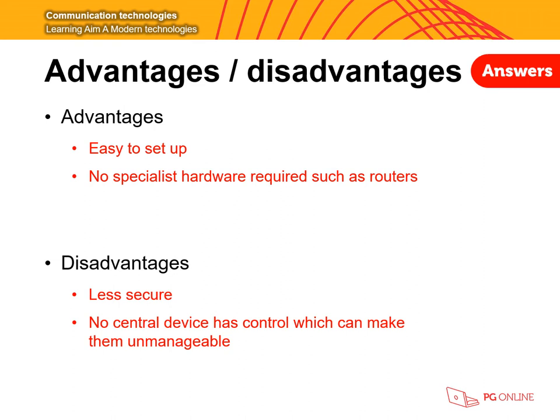Some disadvantages of using an ad hoc network are that they're less secure. If you have an open network, anyone could walk past and join your connection. When you put your device into airdrop mode visible to everyone, you may get random people on your list who could connect to your network. If you are sharing confidential files, unknown users may have bad intentions or be hackers and use that information for bad purposes. There's also no central device with control, which can make it unmanageable, and people can be competing to use the network at the same time.